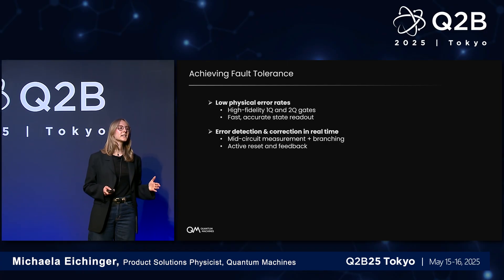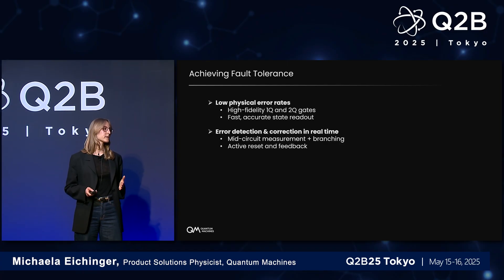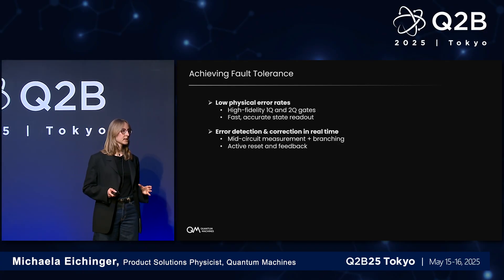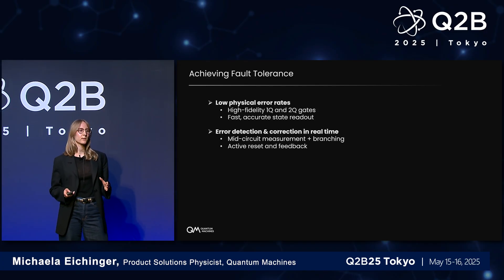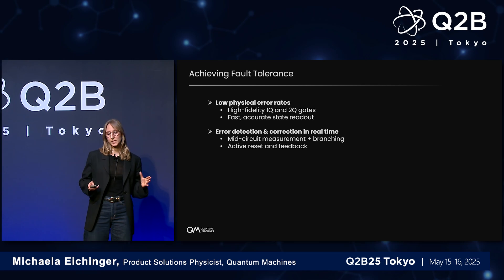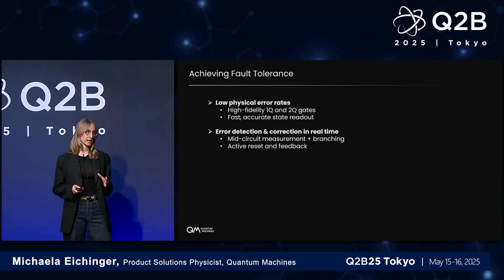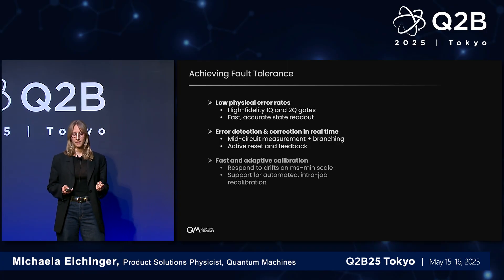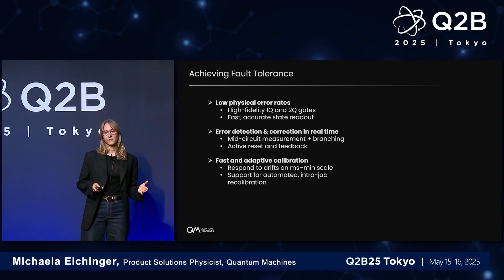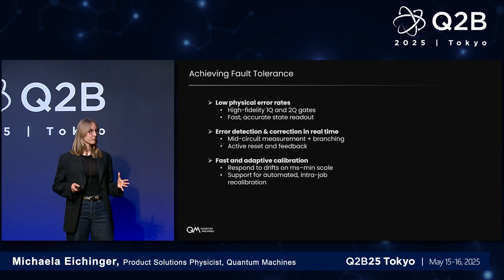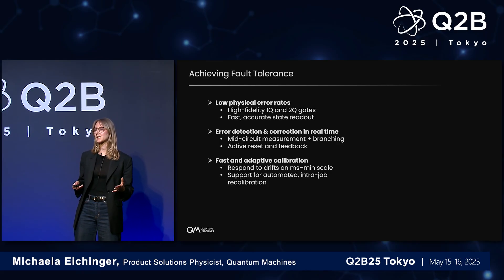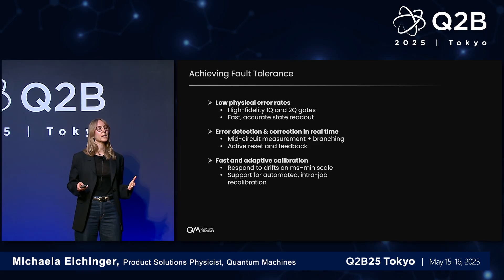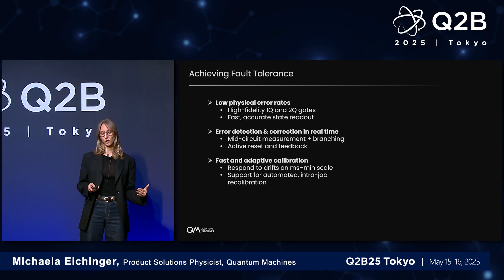It becomes very clear, especially with the latest experiments in this area, that it's not just enough to do post-processing. For fault-tolerant quantum computing, we need to be able to do mid-circuit measurements and branching during the execution of these error correction schemes in a very dynamic manner. On the way to quantum error correction, there is another big bottleneck: calibration and tune-up — how do we tune-up these systems and really move on and focus on the logical operations?